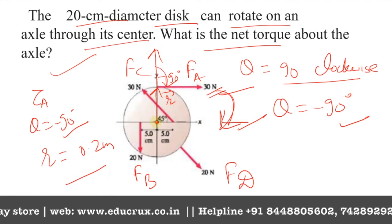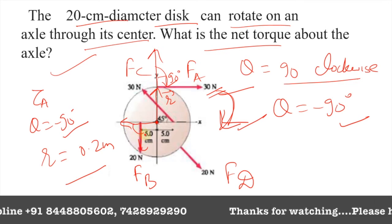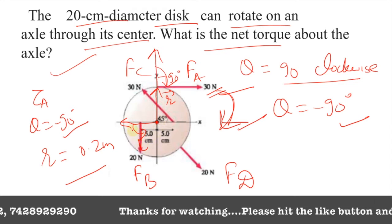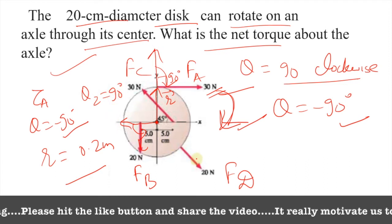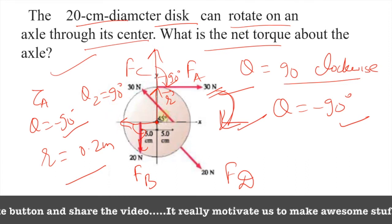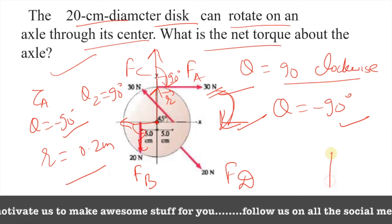For force B, this is r, this is F. We are going in anticlockwise direction, so theta is 90 degrees, positive 90. For C, you see this is the direction of r.